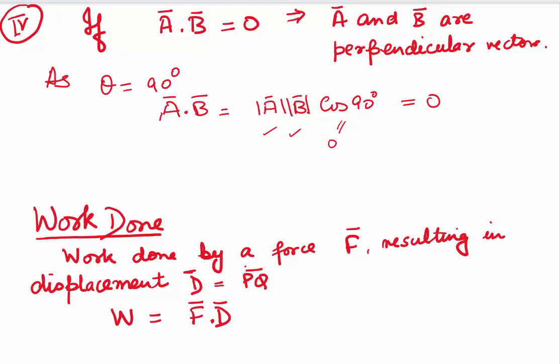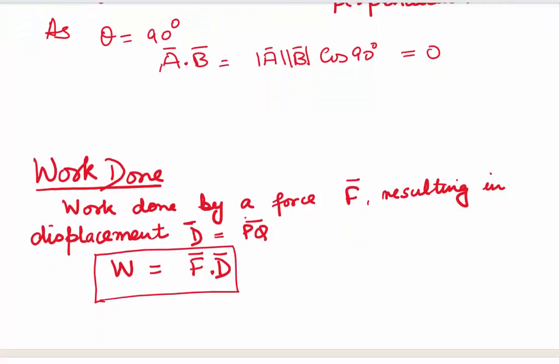One of the important applications of dot product is finding work done. To find the work done by a force F which results in a displacement d, it is given by the dot product of F and d: Work = F dot d.